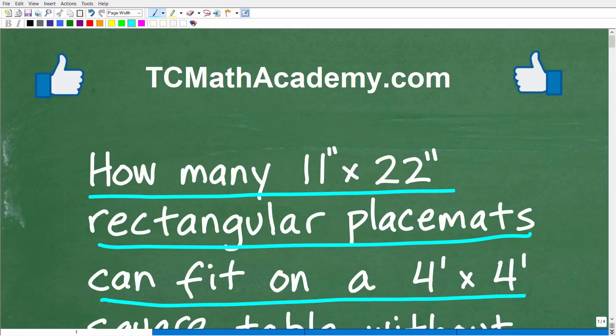How many 11 inch by 22 inch rectangular placemats can fit on a 4 foot by 4 foot square table without overlapping? Okay, so that is the question. Feel free to use a calculator. But if you can figure this out, go ahead and put your answer into the comment section. I'll show you the correct answer in just one second. Then, of course, I'm going to solve this problem step by step.